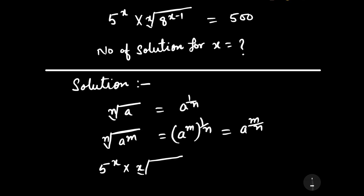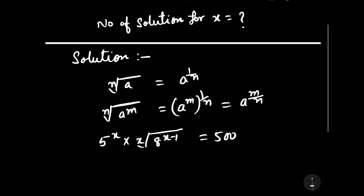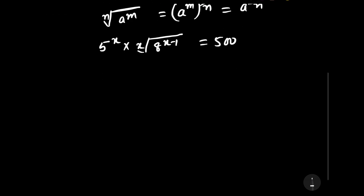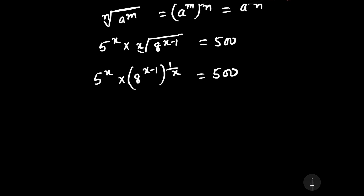We can rewrite it as 5 to the power x into 8 to the power x minus 1, whole to the power 1 by x, is equal to 500.